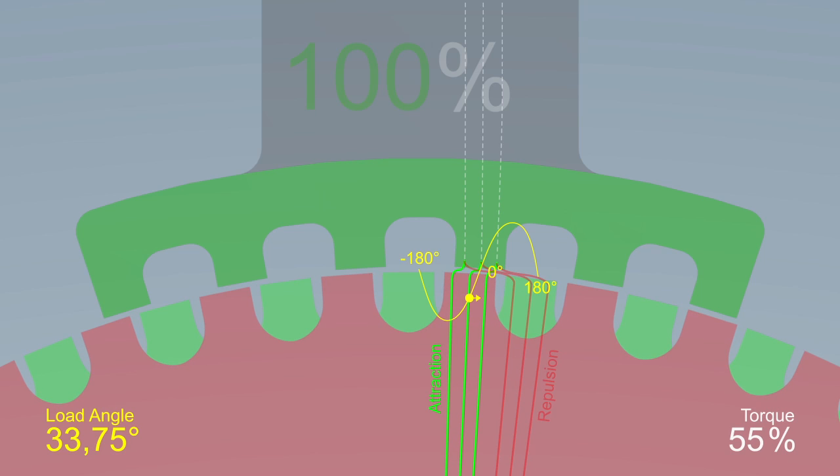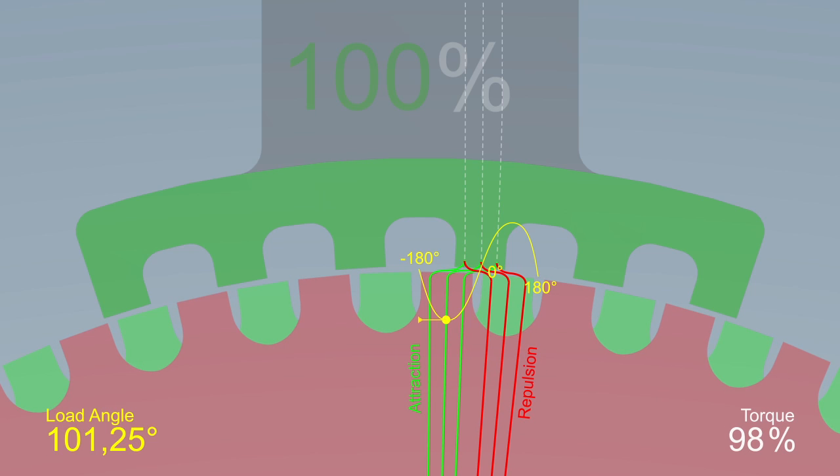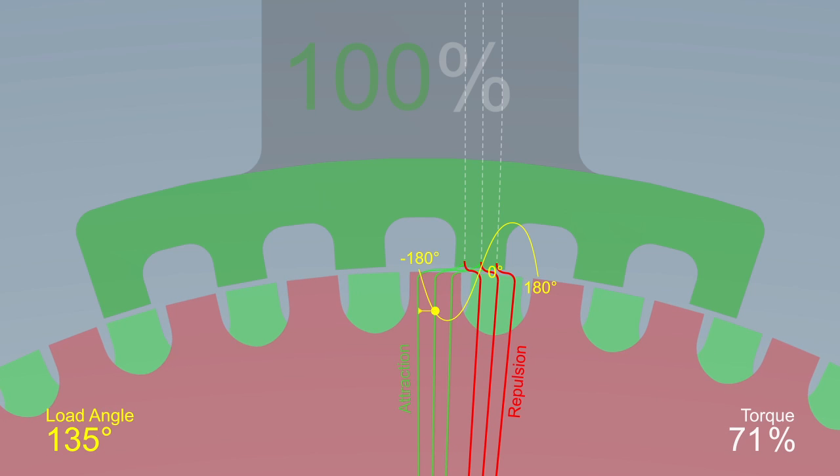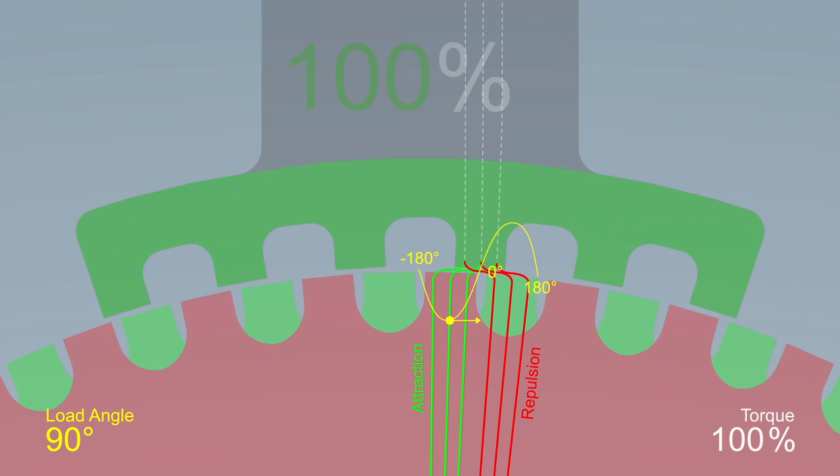Through the vectorial total of the forces of attraction and repulsion, the maximum torque and therefore the optimal load angle is achieved when the stator field is precisely perpendicular to the rotor field or at 1.8 degrees.